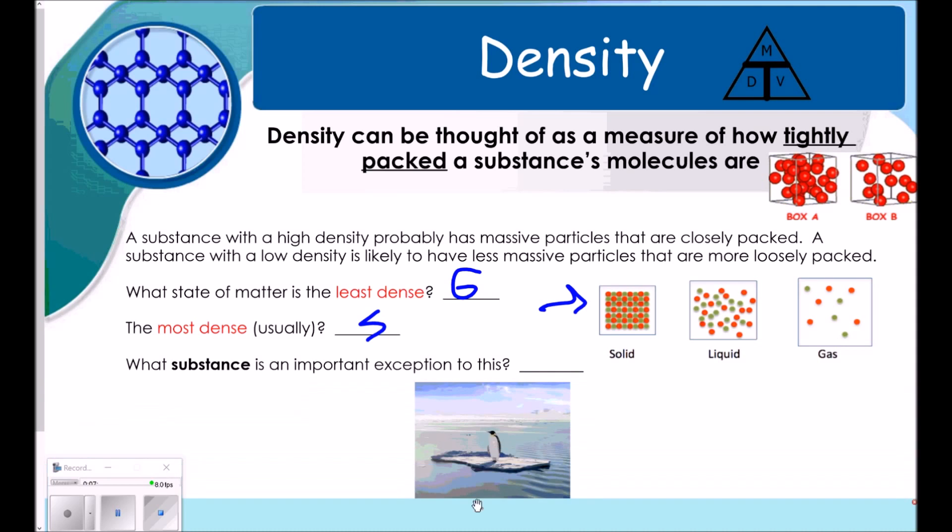Okay, I've got my little picture here. The substance that is an exception to this is water. And the evidence that we have to support this is that ice floats. As you can see, our cute little penguin here is sitting on ice that's floating on water. So, ice is less dense than water.